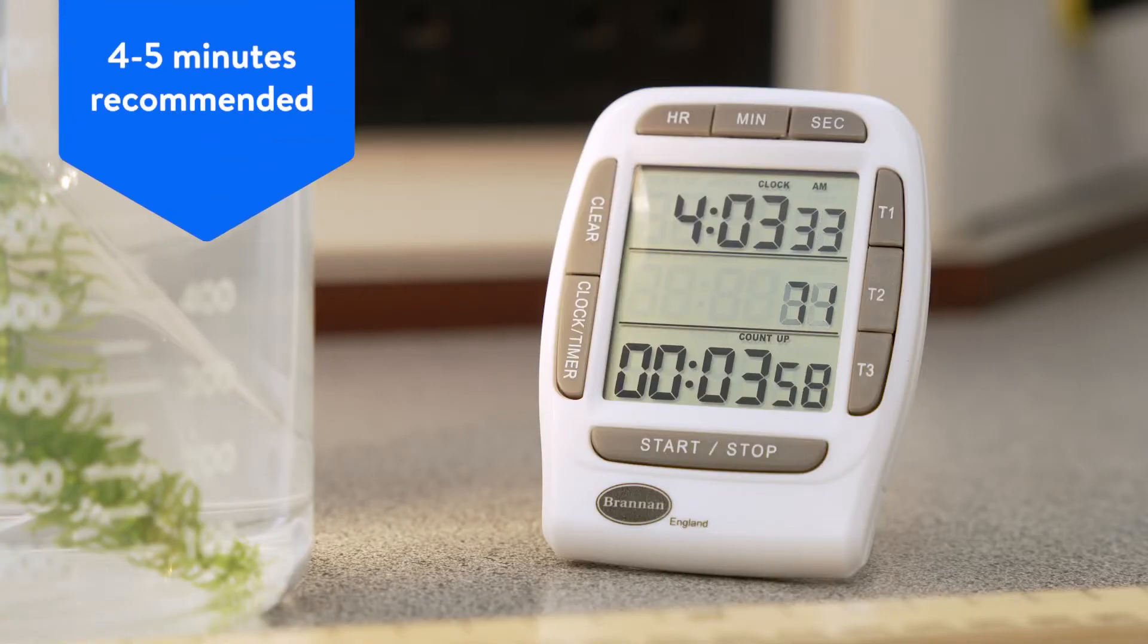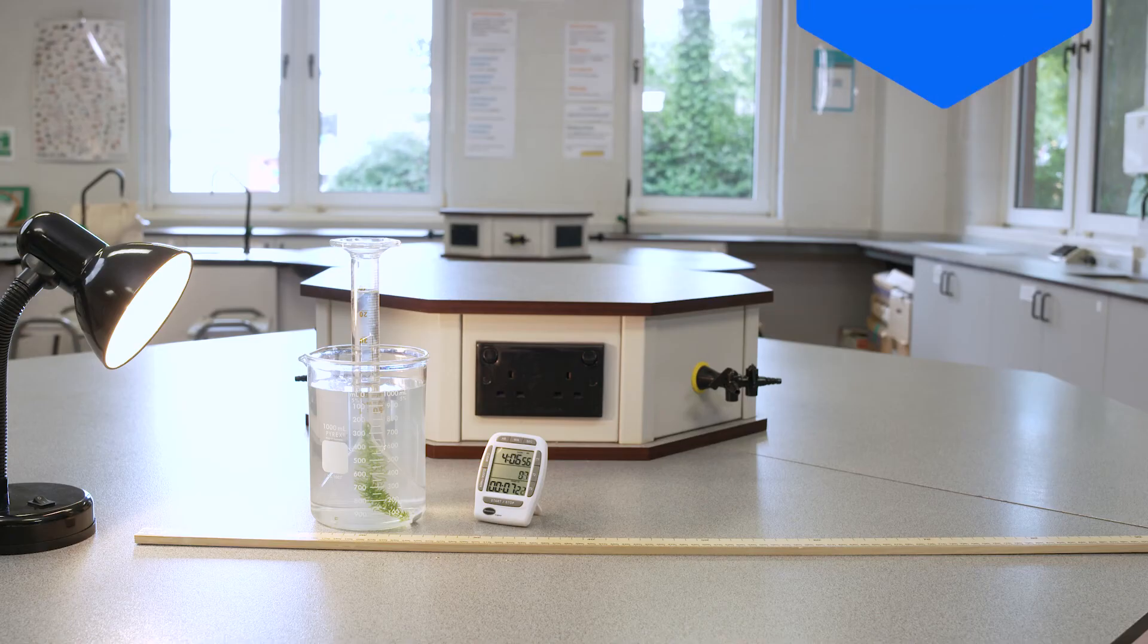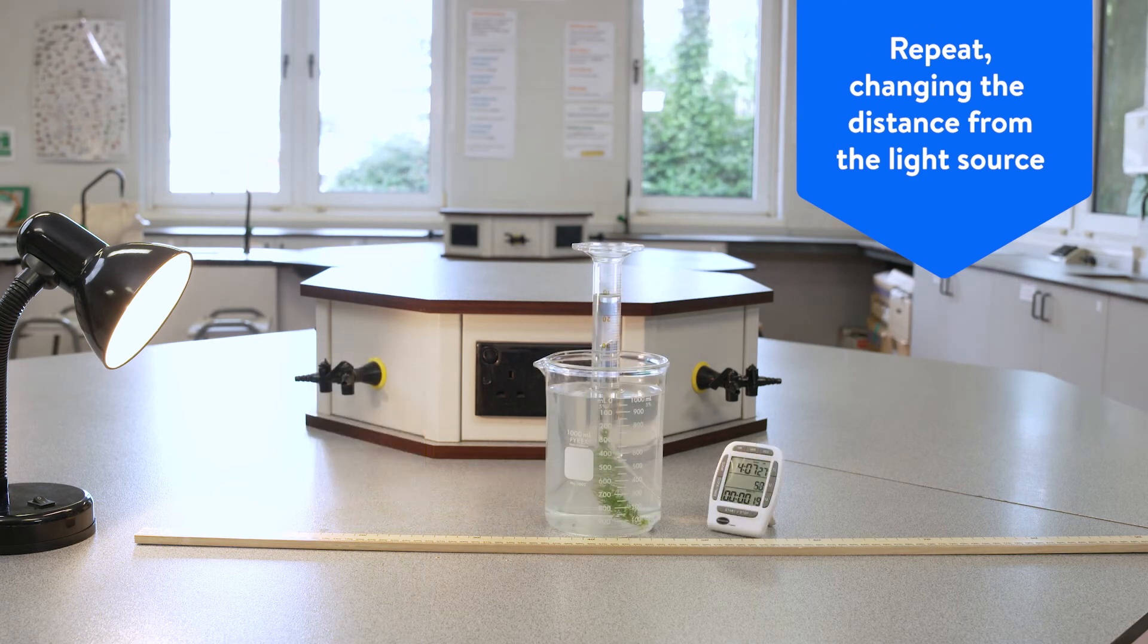Record your findings in a suitable table. Repeat this process changing the distance between the lamp and the beaker containing the pond weed.